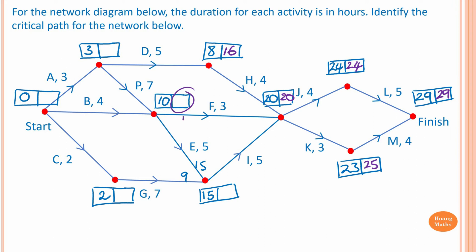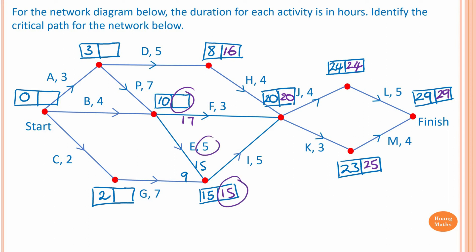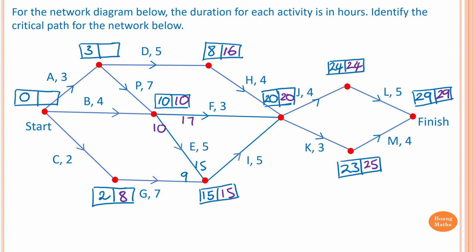To work out the latest starting time for activity I: twenty minus three gives seventeen. For activity E: twenty minus five is fifteen. Then fifteen minus five is ten, so the smallest value is ten — that is the latest starting time for activity G. We go ten minus seven, giving three; and at five that gives eight.